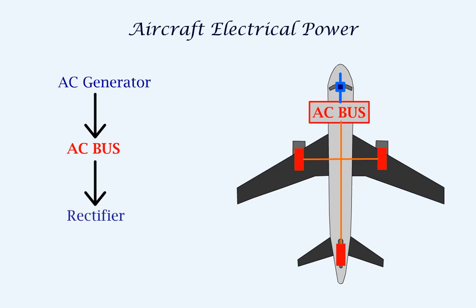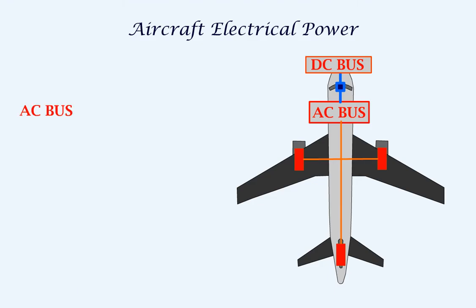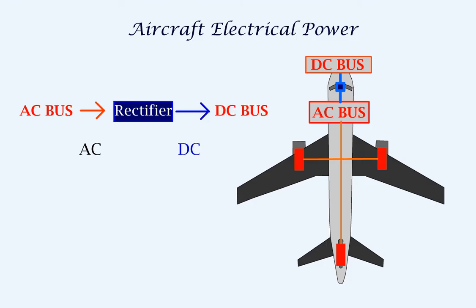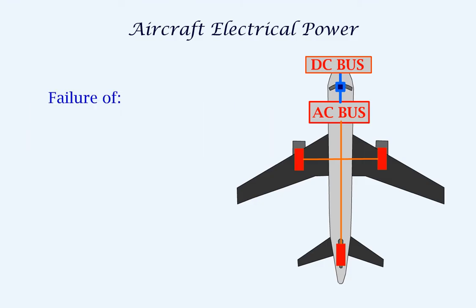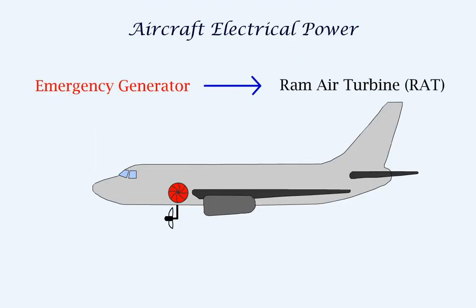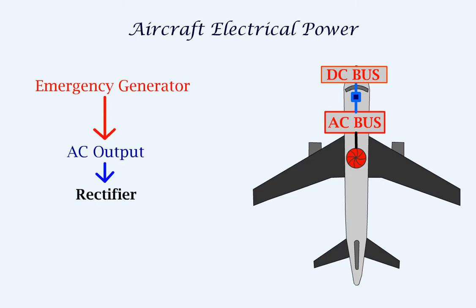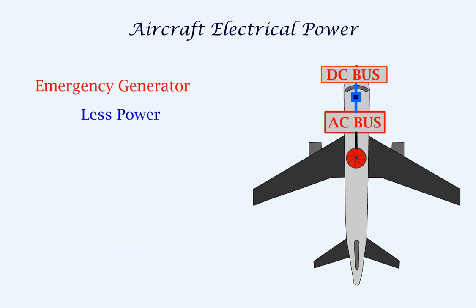The AC generators connected to the engines and the APU are connected to an AC bus for power distribution. The AC bus is connected to a rectifier which is then connected to a DC bus. So from the AC bus, we have alternating current or AC, which is converted in the rectifier to direct current or DC. In case of failure of engine generators and the APU generators, an emergency generator is installed in some aircraft. This generator is connected to the ram air turbine which rotates because of the forward movement of the aircraft. From the emergency generator, we get AC output which is distributed via the AC bus, then through the rectifier to the DC bus.